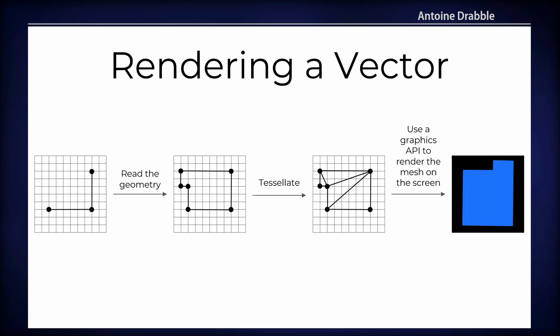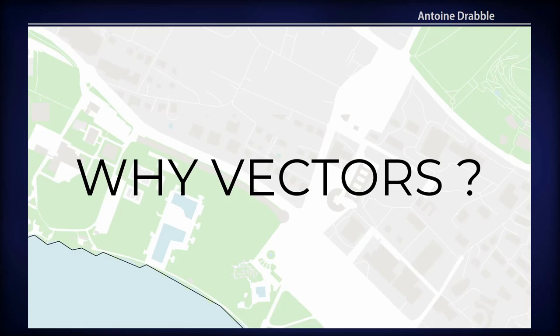We give this mesh to the graphics API along with shaders. A shader is a small program; in our case we use two — one to decide where to place the vertices of the triangles, and another to decide which color each pixel should be.